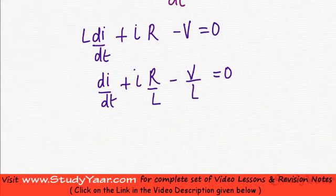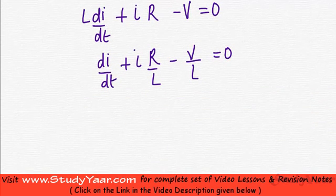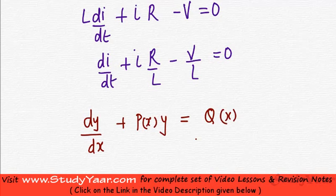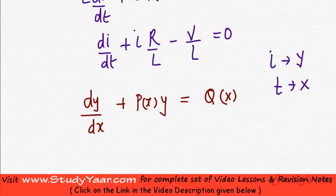Now if you compare this with a standard linear equation, my standard linear equation of first order is given by dy by dx plus P(x)y equals q of x. In this case, your i is essentially y and your t is essentially x.